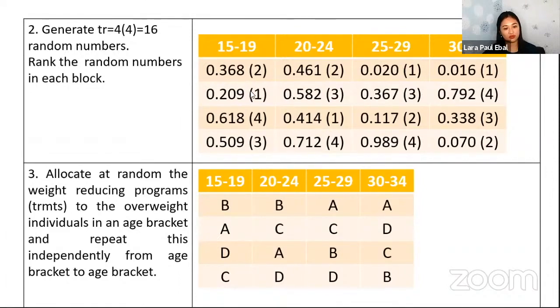And the next is we now assign the treatment. Take note that rank 1 of this experimental unit will receive treatment A, then 2 receives B, and then 3 receives C, and then 4 receives D. Then the same process. In the next block, you can have 1 as treatment A, 2 as treatment B, then 3 as treatment C, then 4 as treatment D, and so on. So I hope you follow.